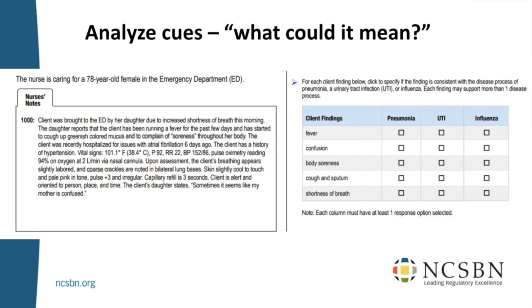Nothing is sacred about these templates. If you want to use a different number of rows or different conditions, go ahead. At NCSBN we've released sample items in our June 2020 newsletter. The point is, rather than starting from a blank page, you can take these items and modify them for a new scenario. You can say 'I like this item type — now let me change it to fit what I've got.'